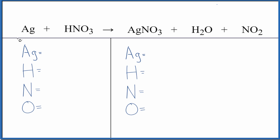I was asked to balance the equation Ag plus HNO3, and we get AgNO3, H2O, and NO2. So this is silver and nitric acid, and this is going to be concentrated and hot nitric acid in order to end up with this NO2 here.